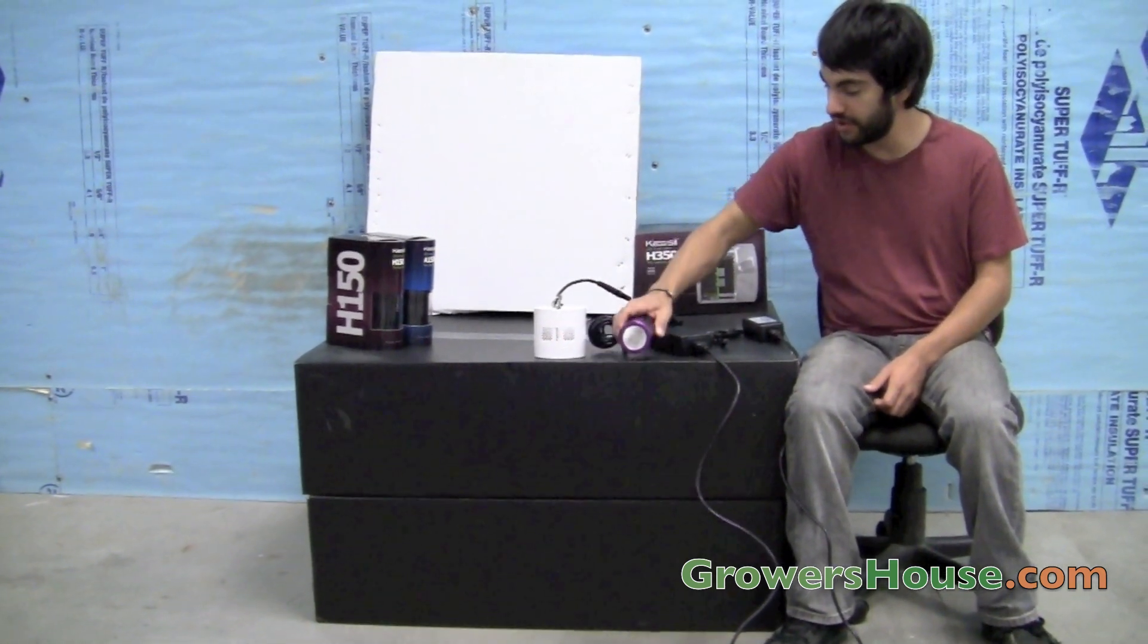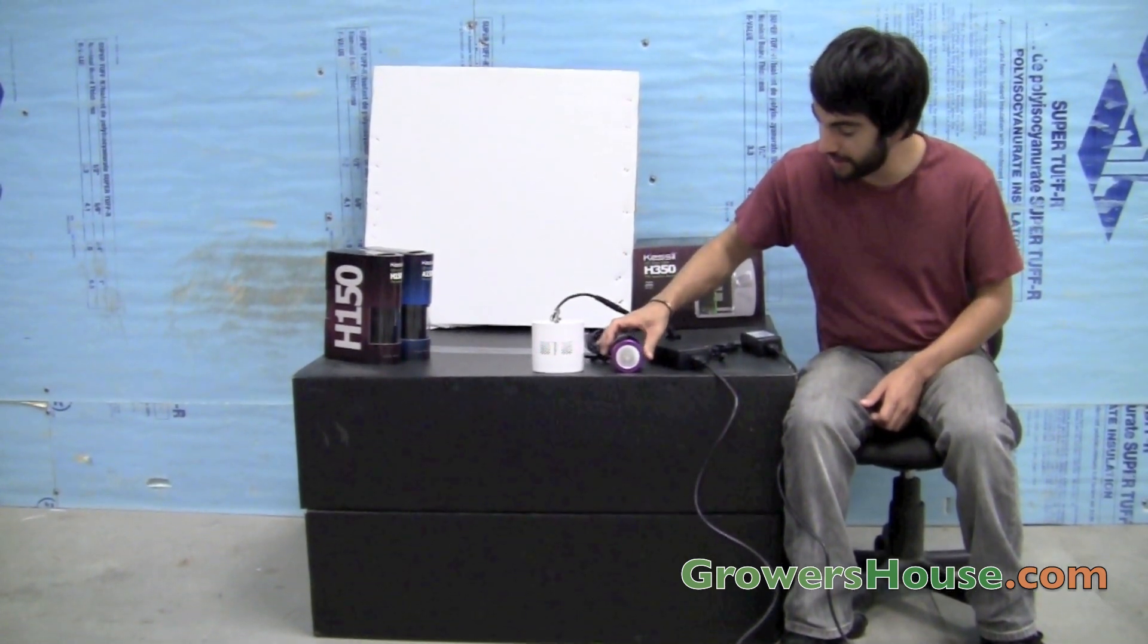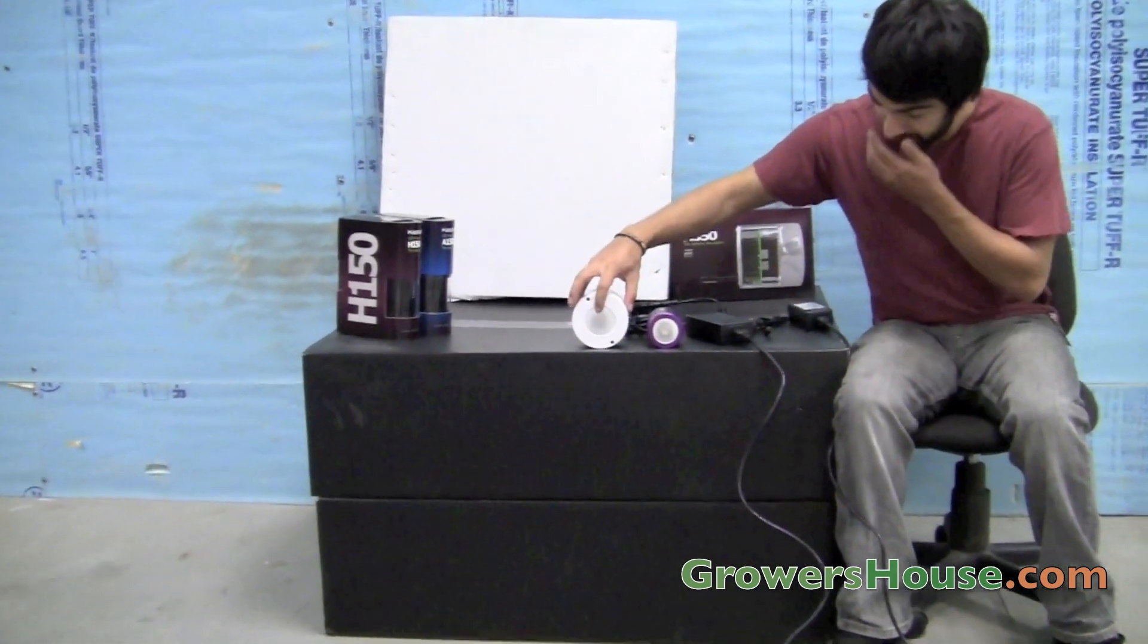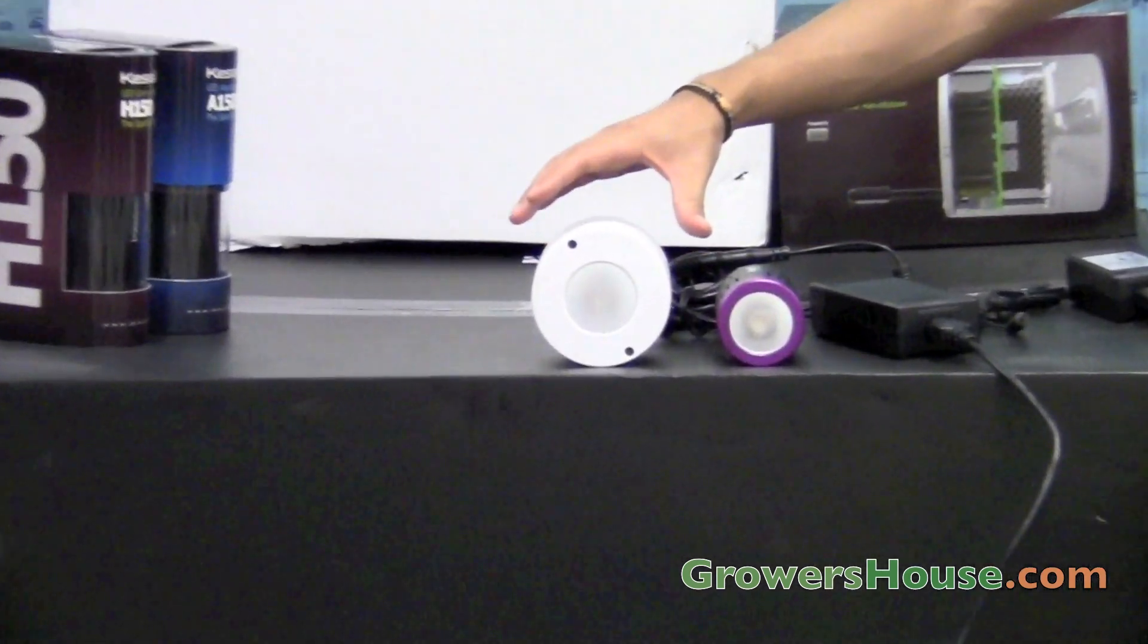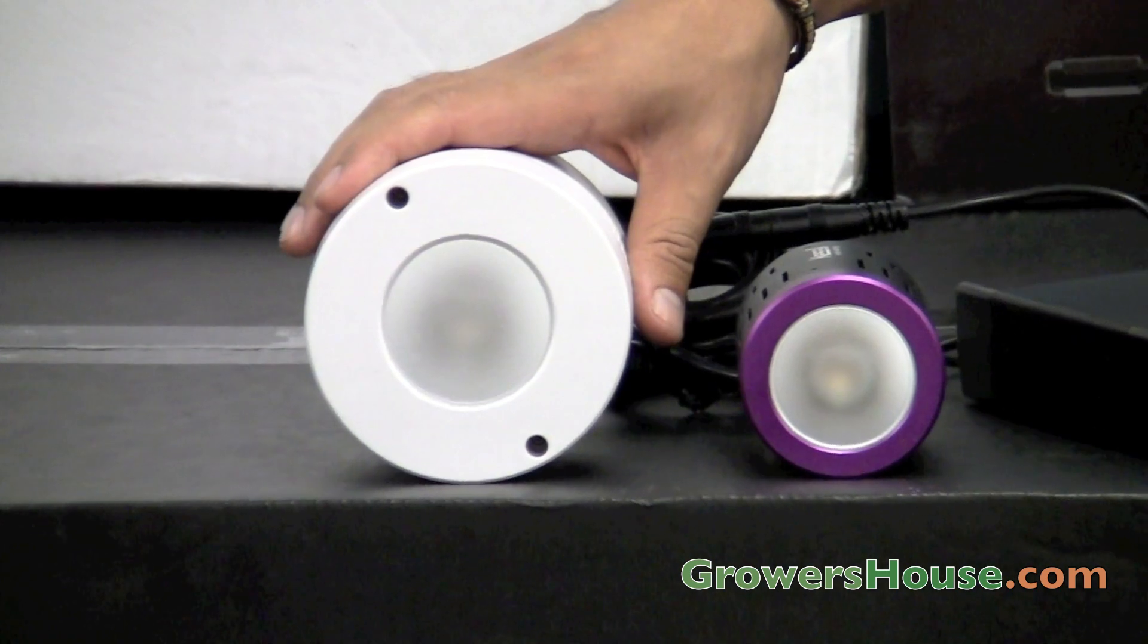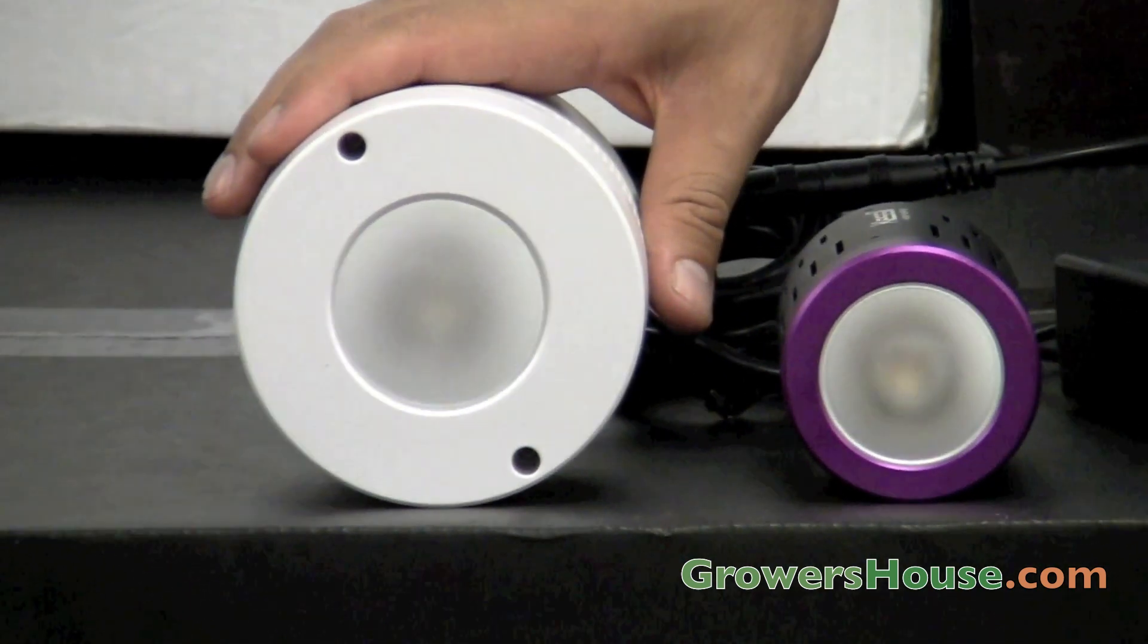Now both of these units, you won't be able to see the array behind the screen here. But inside, essentially, there are a whole bunch of tiny LEDs on a very small little panel that make up the lighting source for these units.